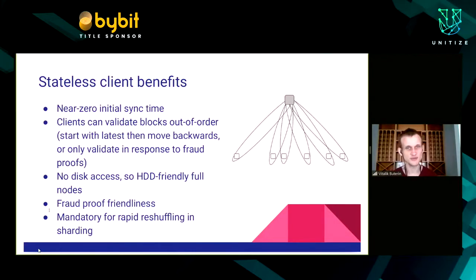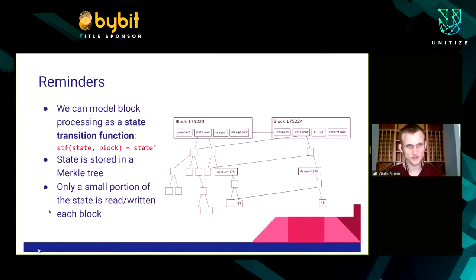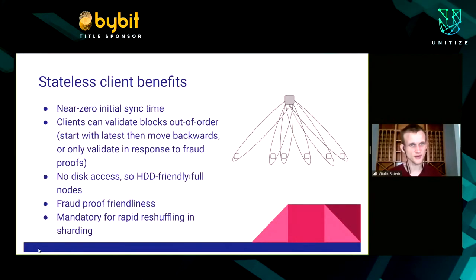Stateless clients offer fraud proof friendliness. In an Ethereum 2.0 sharding context, stateless clients are basically mandatory, because nodes get rapidly reshuffled between different shards — one moment you might be on shard 2047, then suddenly reshuffled to shard 45, and you have to verify a block almost immediately without enough time to download the entire shard state. The solution is to ask for a witness and verify statelessly.